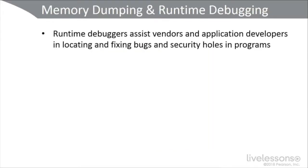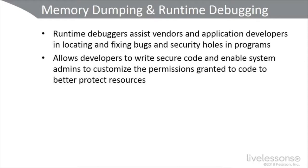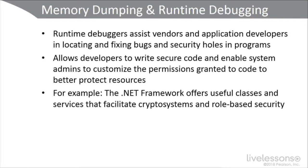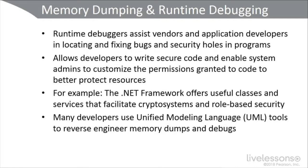Let's look at memory dumps and runtime debugging. Runtime debuggers help vendors and application developers locate and fix bugs and security holes in programs. It allows developers to write secure code and enables system admins to customize the permissions granted to code to better protect resources. For example, the .NET framework offers useful classes and services that facilitate crypto systems and role-based security. Many developers will use Unified Modeling Language (UML) tools to reverse engineer memory dumps and debugs.